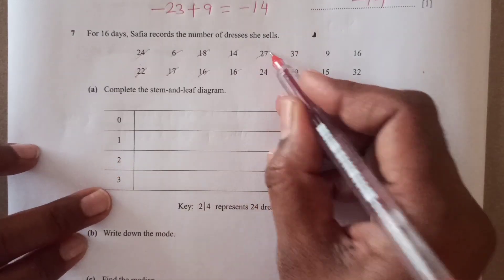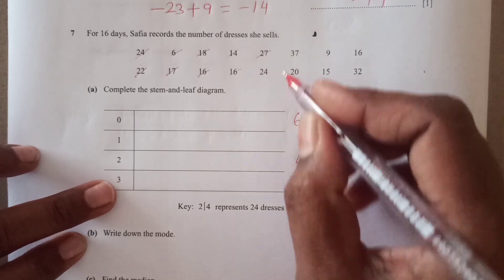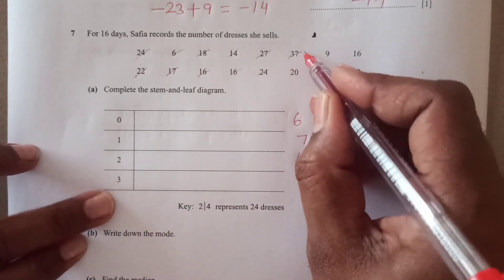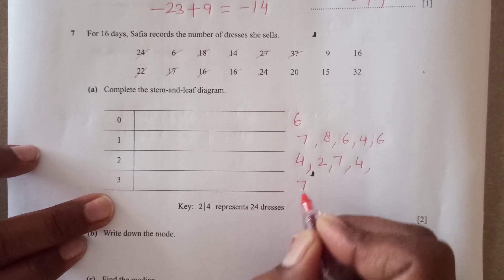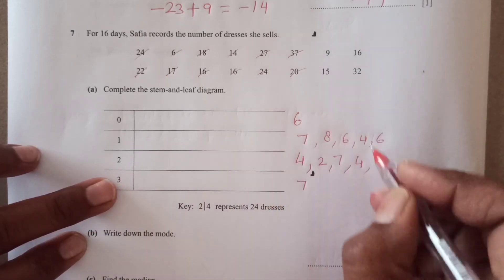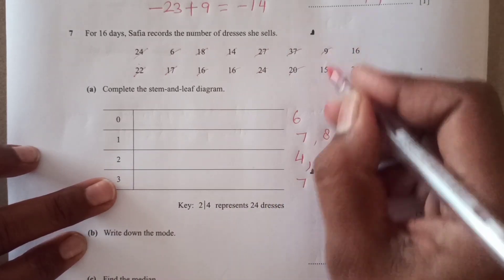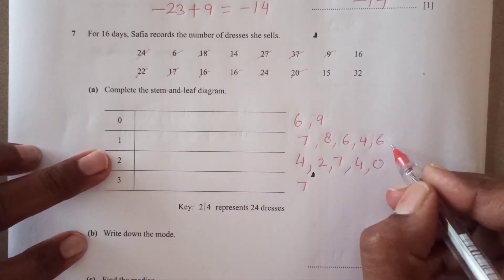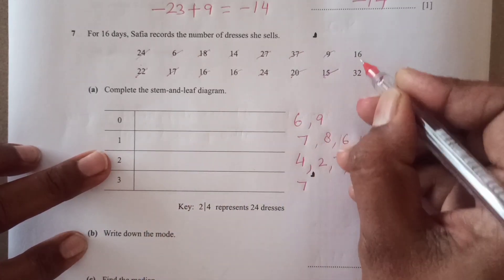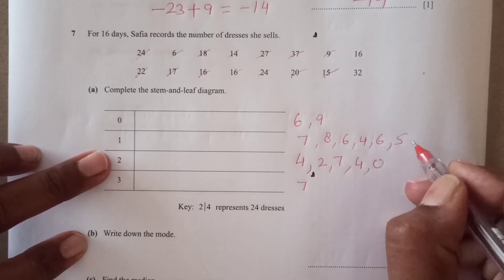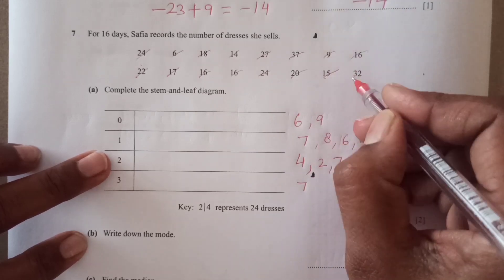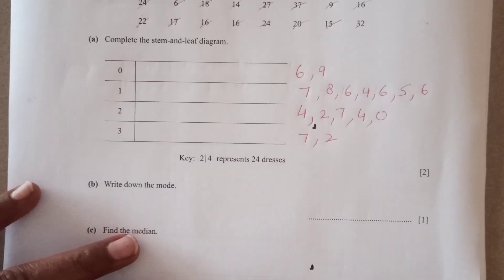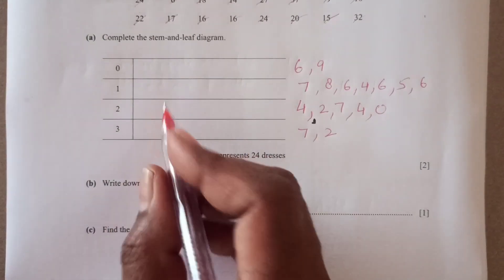Then 27, 27 is here. 24 is also here with 2. 37 is here, 3. 20 going to be here. 9 is in the first one. 15 with 1 is 5. And 16 is again here with 6, 6 and 32. 32 will go here.